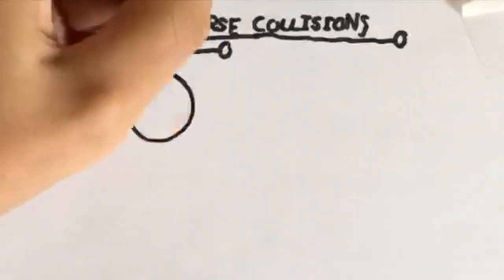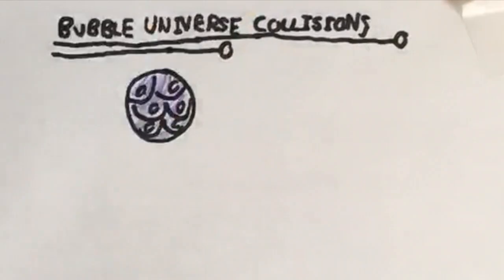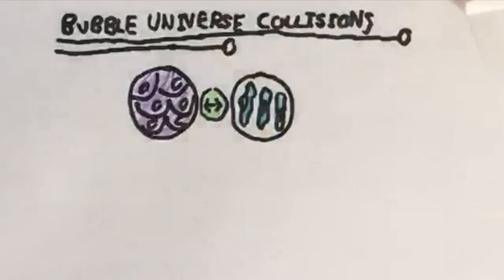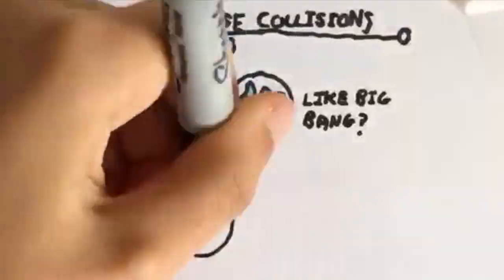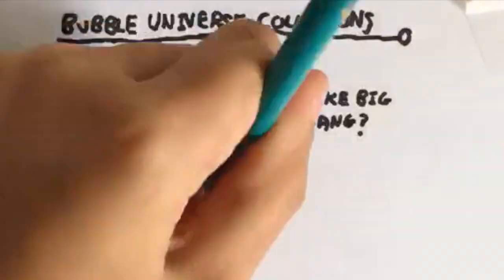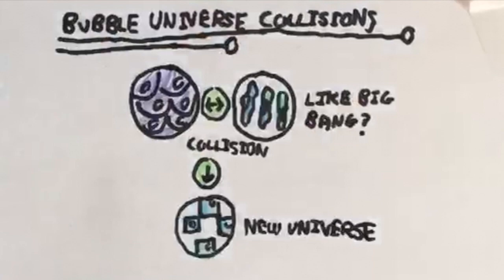If two bubble universes were to collide, then perhaps they would form a new universe with wholly new laws of physics, and what we would perceive as the Big Bang could, in fact, be the collision of these two universes.